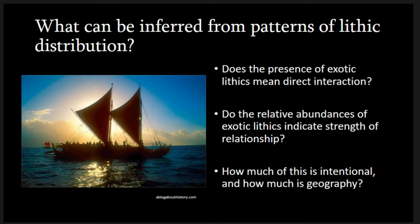And this is the heart of the question I want to ask: what can be inferred from these patterns of lithic distribution? We find these exotic lithics — pieces that come from far away — but does this mean there was direct interaction between those places? Do the relative abundances of exotic lithics indicate the strength of a relationship? And how much of the pattern is explained by the geography of the Pacific islands versus intentional preferential relationships? That last question is what I'm going to try to look at specifically with a model.